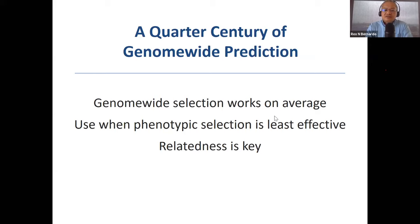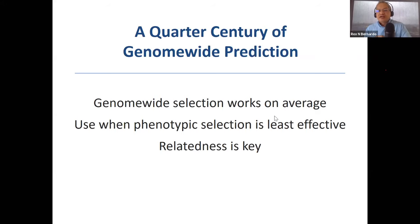Is there a minimum size for a trustworthy training set, given that relatedness is the key factor? The first GBLUP study I did in 1994 had 55 individuals, and it worked in a well-balanced dataset with strong relatedness. So yes, there is a minimum, and with strong relatedness, even 100 individuals or so should be sufficient — though of course you want it as large as possible.